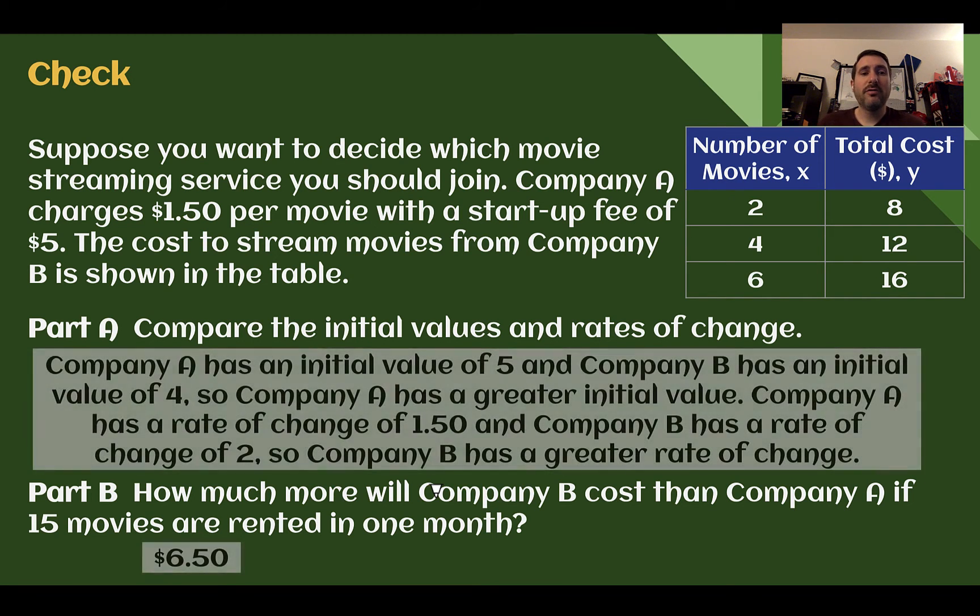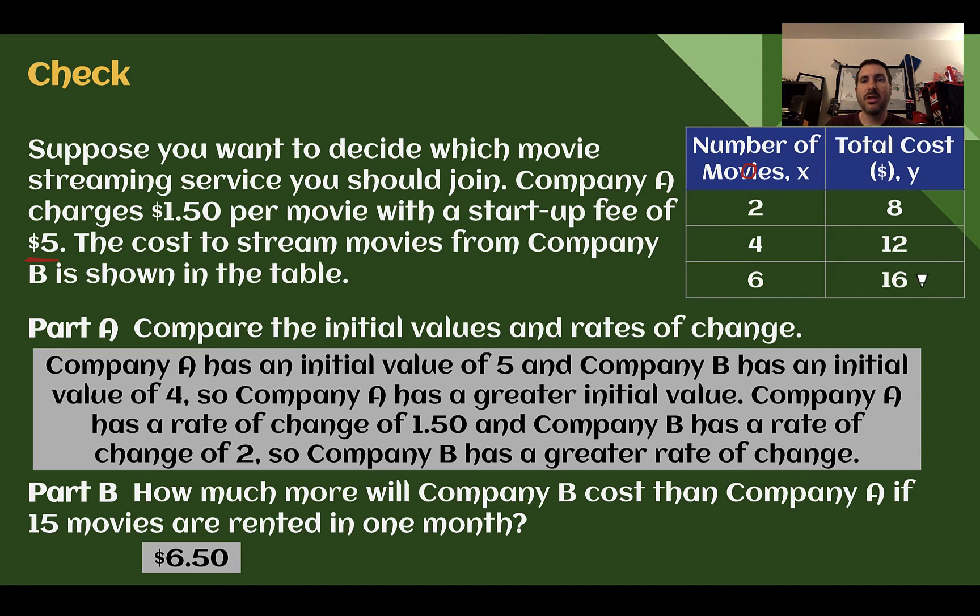Check your answer. First, Company A has an initial value of 5. There's your startup fee, that's your initial value. While Company B has an initial value of 4. If we go back, this is going 2, 2, so the next one back would be our 0. Down 4, down 4, so down 4 again. Our initial value would be 4. So based on their initial values, Company A had a higher startup cost or higher initial value.